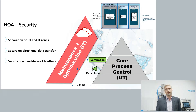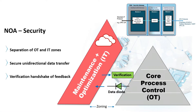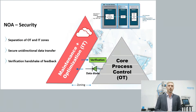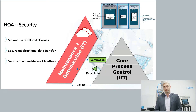On security concepts: one key aspect is the separation of core process control from the maintenance and optimization domain, as mentioned earlier. To make the zoning work, a barrier must be implemented between the two domains. Any communication path between them must be specifically secured. The main path — the readout of core process control data — is handled via what the working group calls a NOA security gateway, also commonly called a data diode: it enforces unidirectional communication, only outward from the field into the maintenance and optimization domain, with no feedback from the IT domain into core process control.